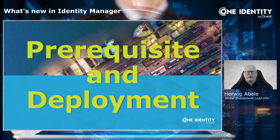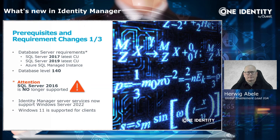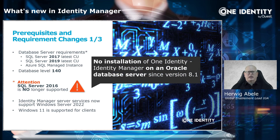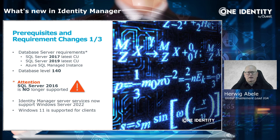Starting with prerequisites and deployment. On the SQL Server side, SQL Server 2016 is no longer supported. You can now use SQL Server 2017 or 2019 — always the latest CU. The database level is 140 for those who want to configure the database on a 2019 server. What is also not supported anymore — as was already the case in 8.1 — is Oracle. Oracle databases are no longer available for the Identity Manager installation.